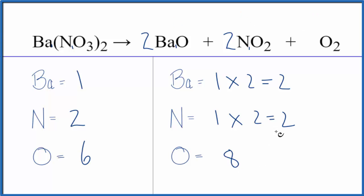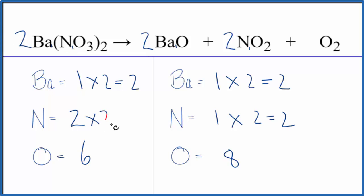We have two bariums on the product side and one on the reactant side, so we put a two in front of Ba(NO3)2. For nitrogen, be careful: two times one is two, times two gives us four. For oxygens on the reactant side, two times three is six, times two equals twelve. Now we need to figure out how to balance the nitrogen and oxygen on the product side.